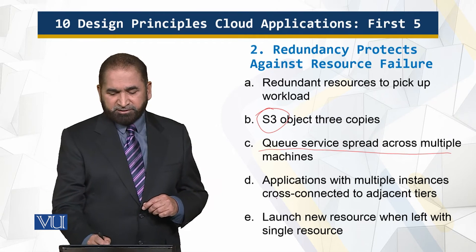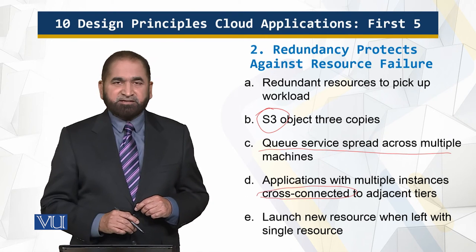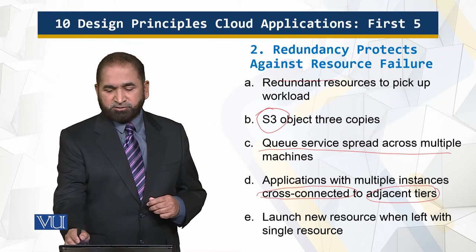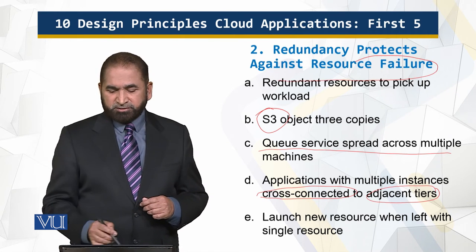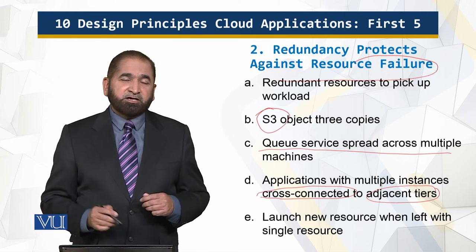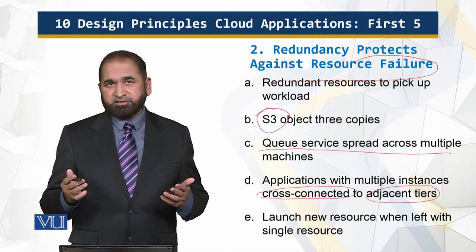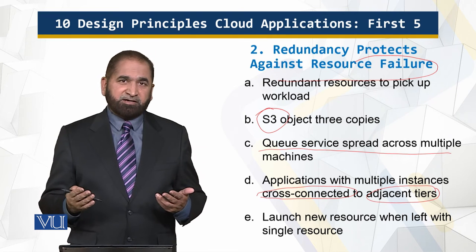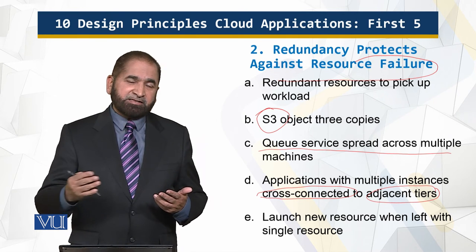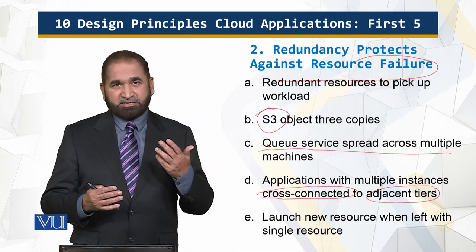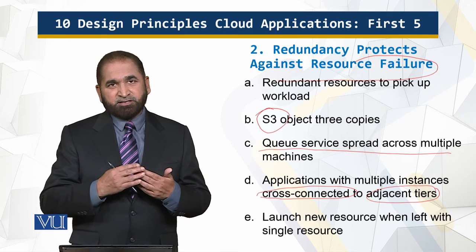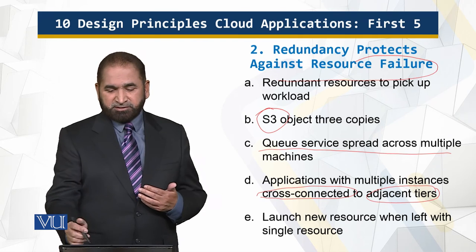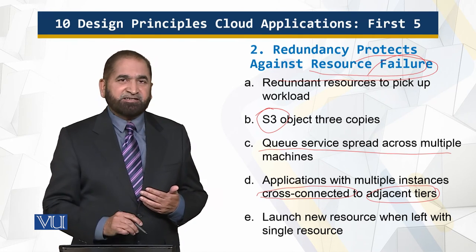Queue services spread across multiple machines, which enables preventing degradation of performance. Applications are also cross-connected to adjacent tiers as protection against resource failure. If you have multiple resources and one fails, bring in the second resource so that there is always a fallback — that is the key principle behind redundancy.